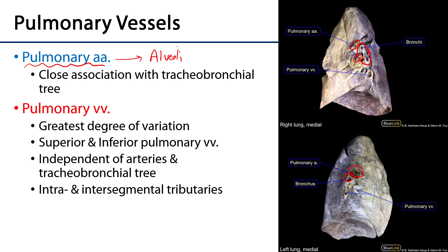The pulmonary veins are color coded here as red. These are not in close association with that tracheobronchial tree — they have a tremendous amount of variation. There is no fidelity to bronchopulmonary segments, so they break free from both the tracheobronchial tree and the bronchopulmonary segments, and there may be both intra- and intersegmental tributaries. There is one pulmonary vein for each lobe at least, so we have both a superior and an inferior pulmonary vein leaving as part of the root of the lung.